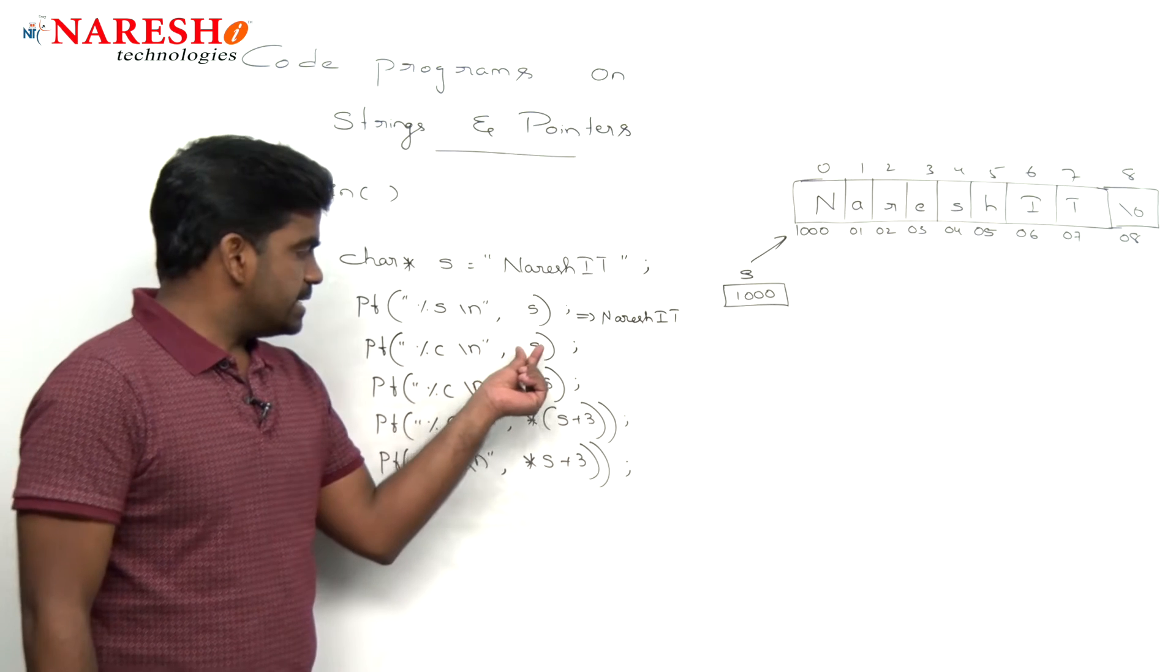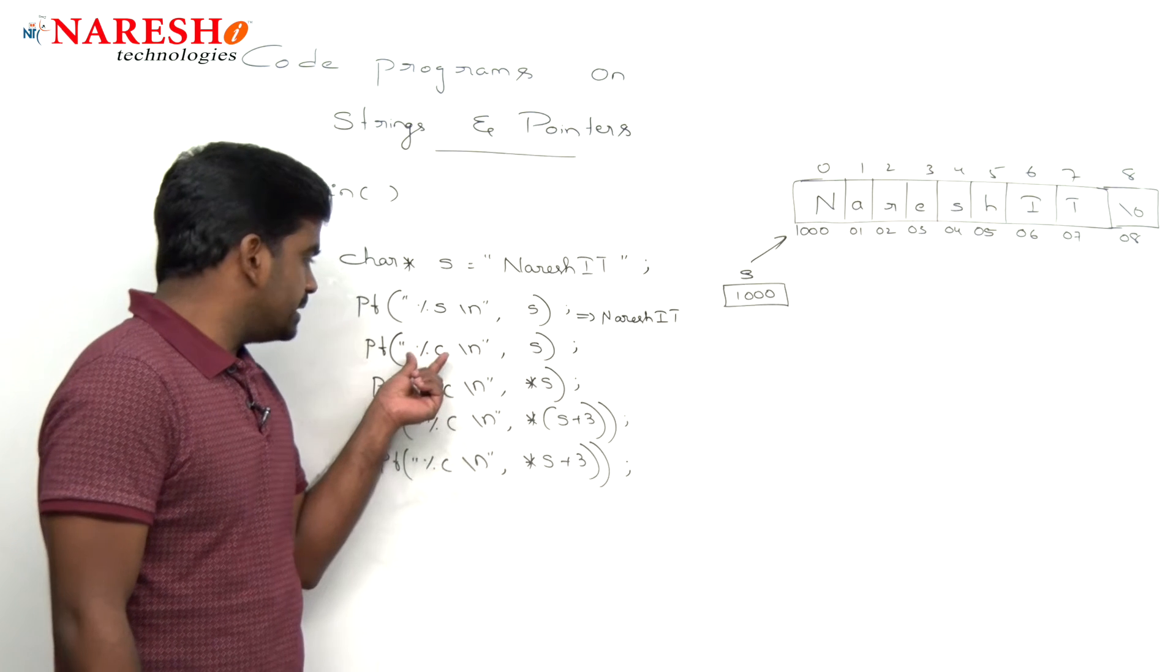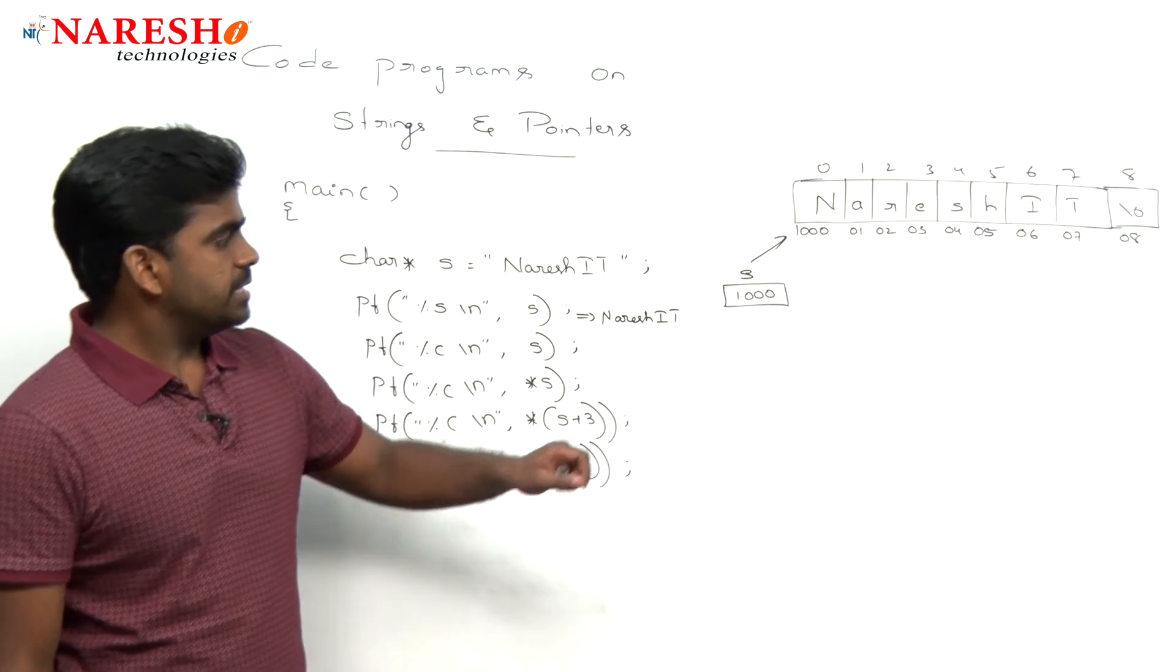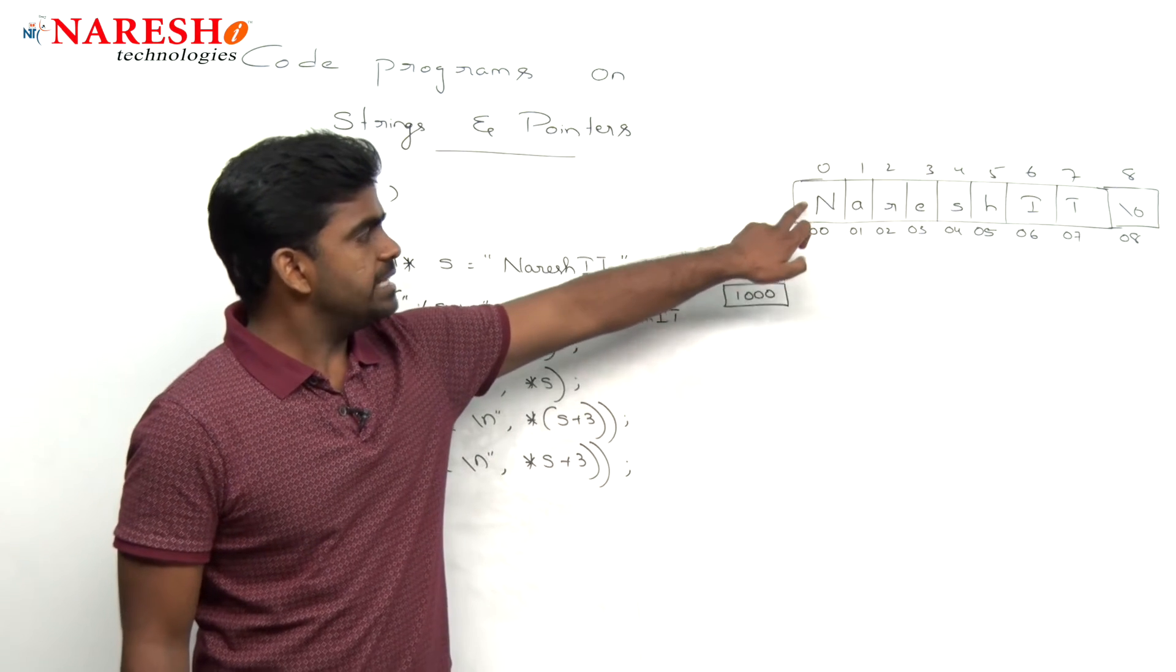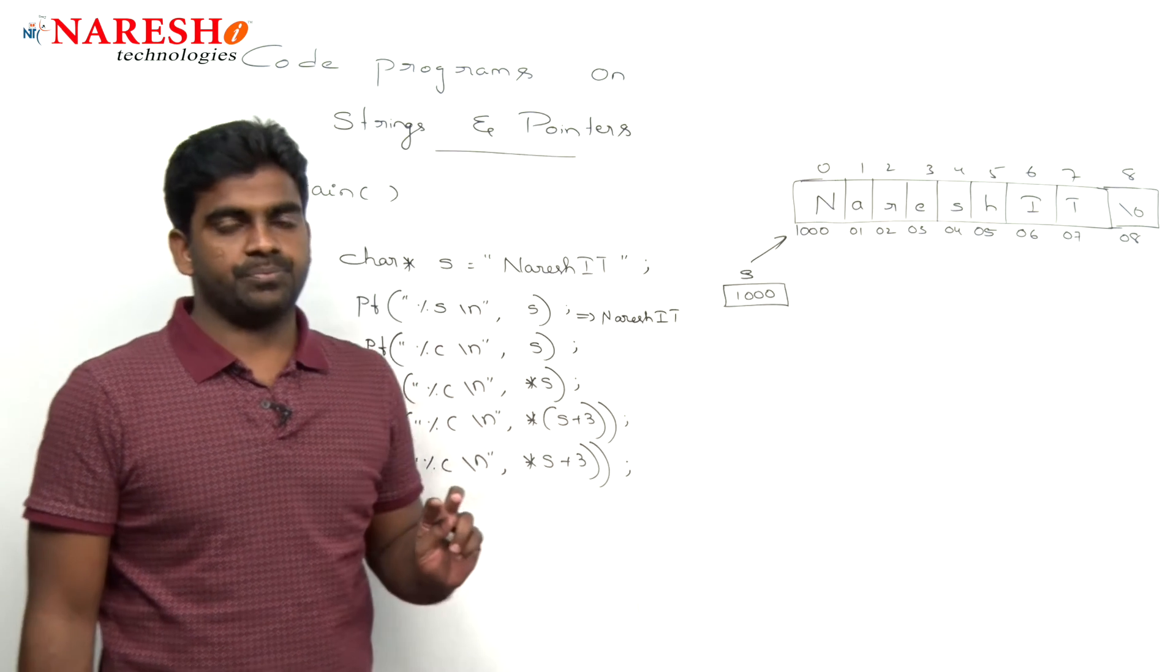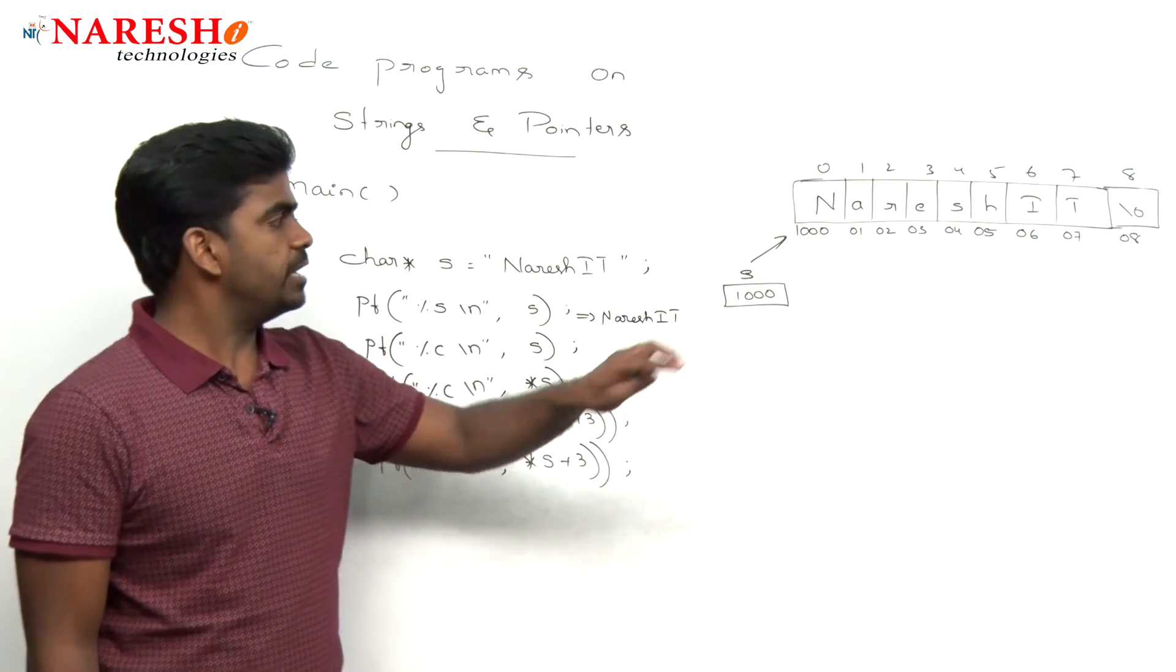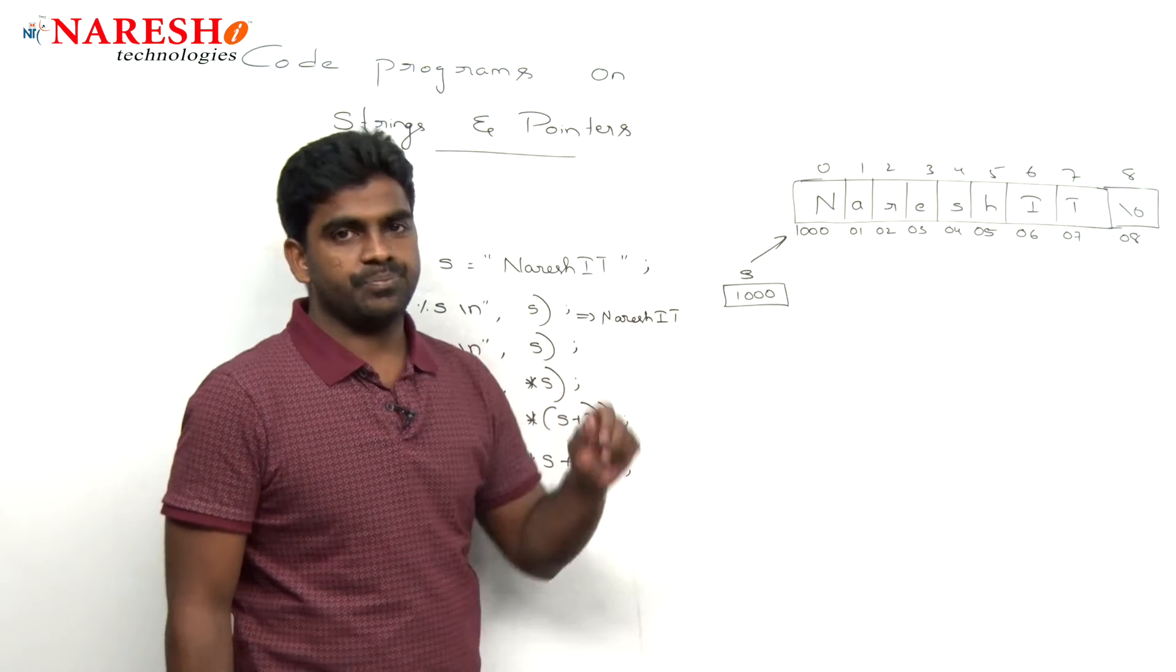Next one - here it is S we have given, but percentage C is the format specifier of a character. So here, whenever we are giving 1000, will it display N? No. For percentage C, we should provide the location, but we are providing the address only.